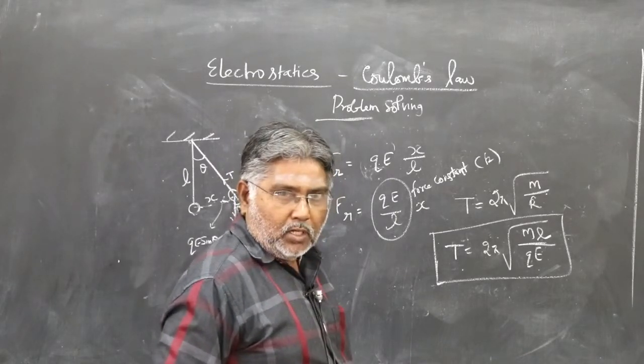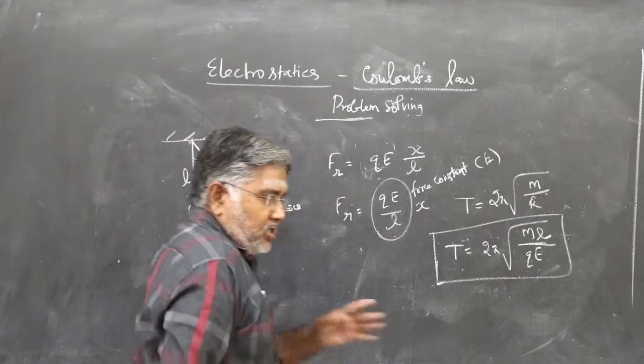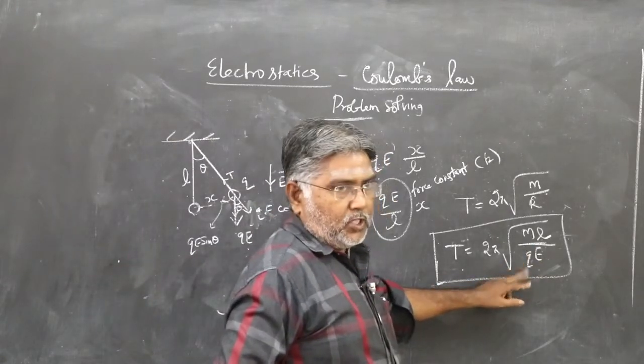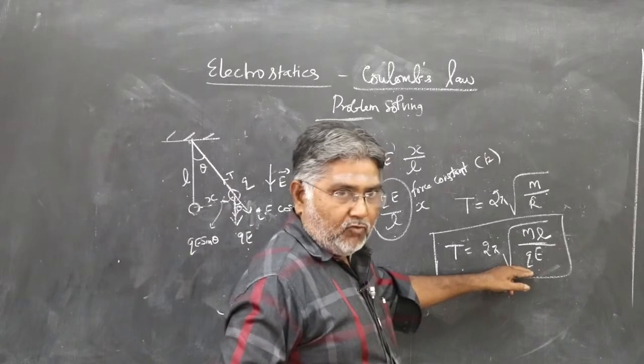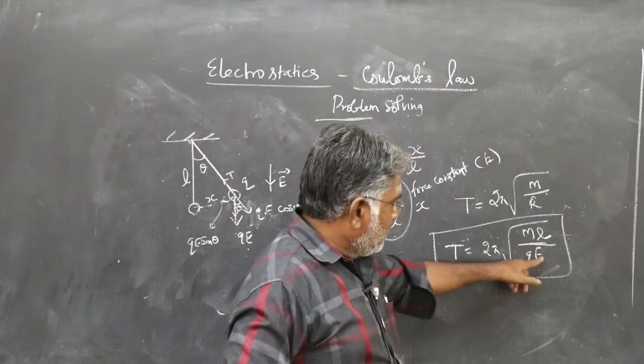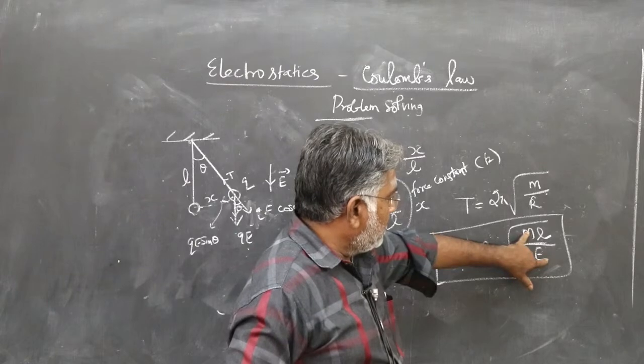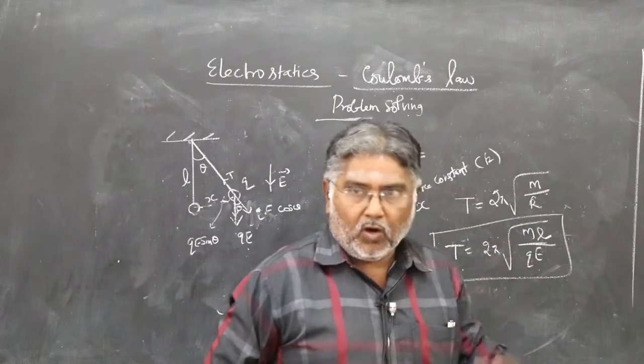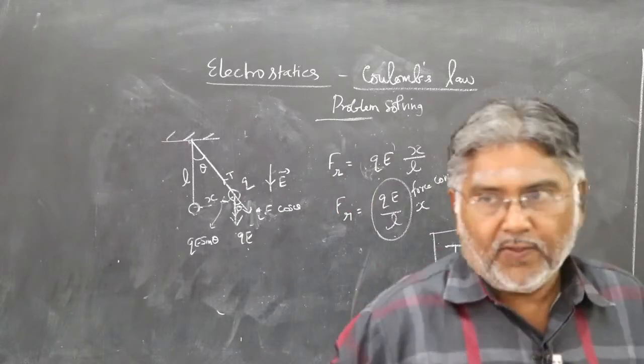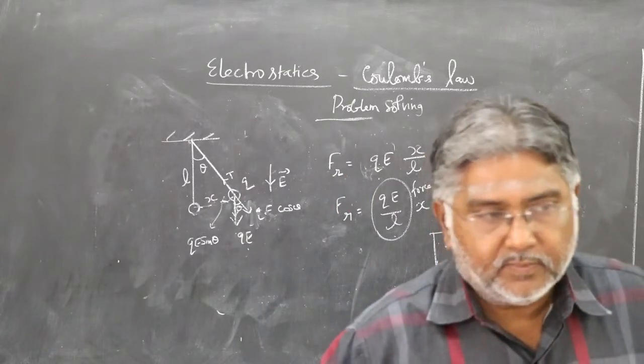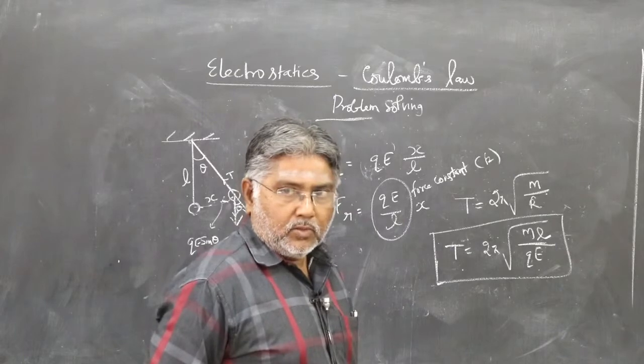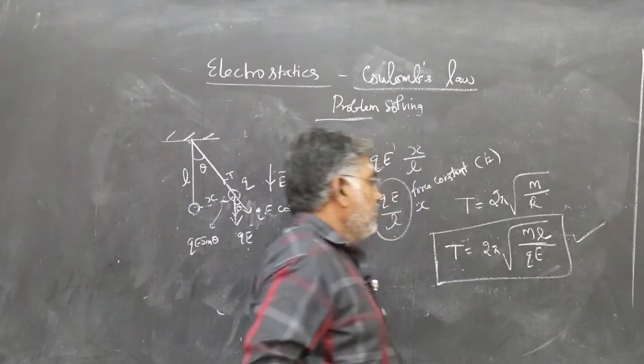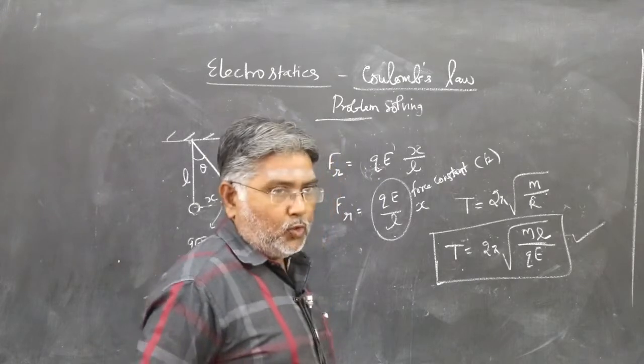Suppose you want to verify your answer in a rough way. This is electric force. You substitute mg as the gravitational force. So mg will come here. M and m will cancel. So T equals 2π times root L by g. Your original formula with which you are familiar is coming here. Therefore, time period of oscillation T equals 2π times square root of mL by qE.